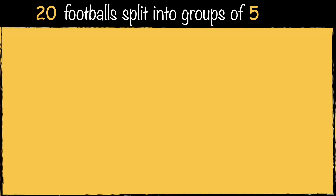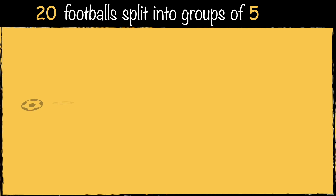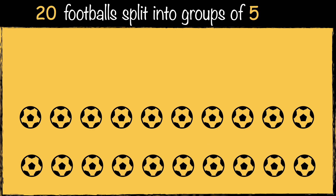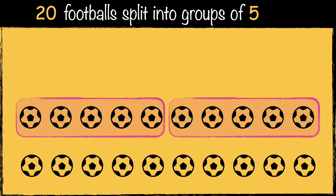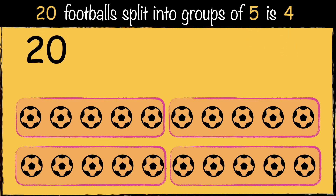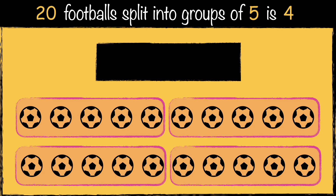Let's have a look at another example. We have 20 footballs and we need to organize them into groups of five for a training session. How many groups of five can we make? One, two, three, four. We've made four groups of five using 20 footballs. This is how we write it as a calculation: 20 divided by five equals four.